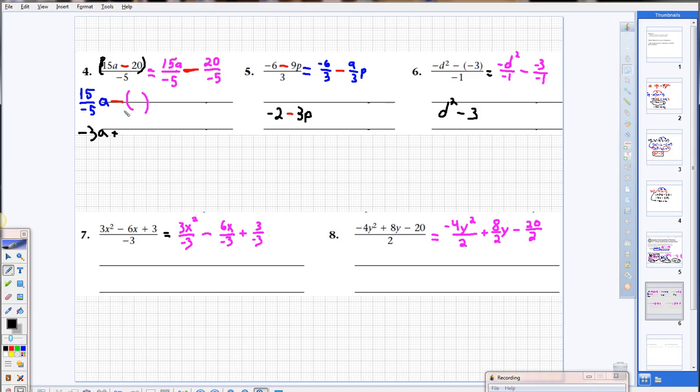15a over negative 5. That's 15 over negative 5a minus 20 over negative 5. And we all know 20 over negative 5, well, 20 divided by negative 5, right? Negative 4. We're thinking division, remember. So then you get minus a negative, same as plus a positive. Okay, and I'm only allowed to use that minus one time. I use it one time there, and I use the negative with the 5 one time.